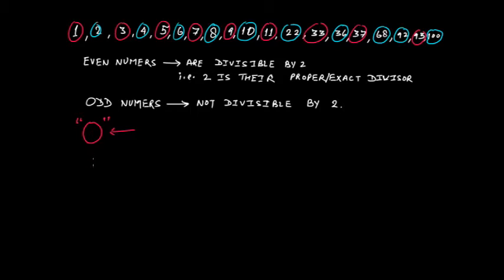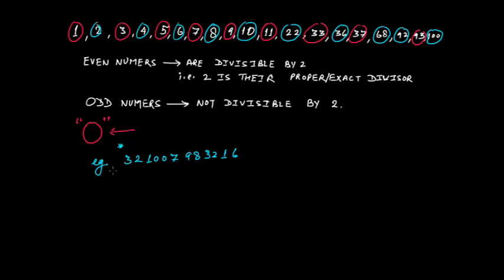Now suppose you are given a question and you have this number: 3, 2, 1, 0, 0, 7, 9, 8, 3, 2, 1 and 6. You are asked whether this number is an even number or an odd number. By definition, even numbers are those which are divisible by 2, so you would start dividing this number by 2, but it would take a lot of time and many steps. So is there any trick? Yes, there is a trick — straight jump to the unit place of that number.